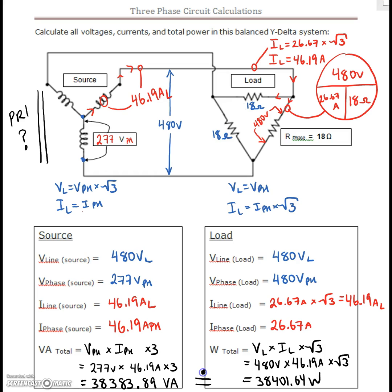Again, these guys are roughly the same. We've got 38,401. Here we got 38,383. They're essentially the same values. This guy is feeding this three-phase resistive load.